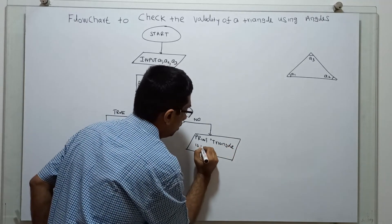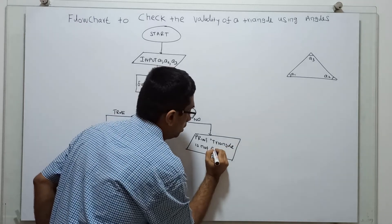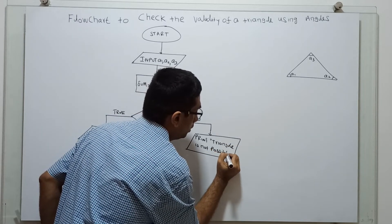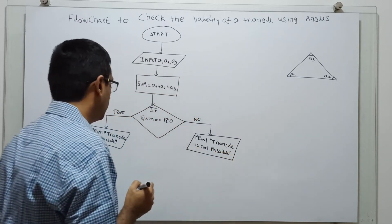triangle is not possible. That means the given three angles are invariant.